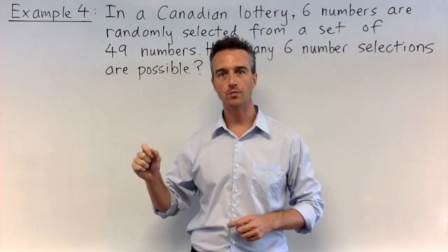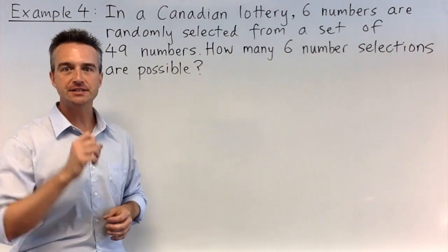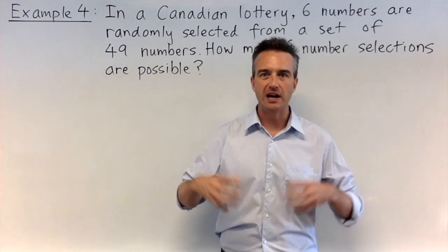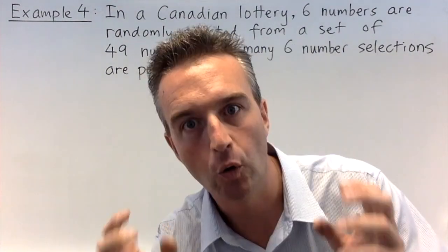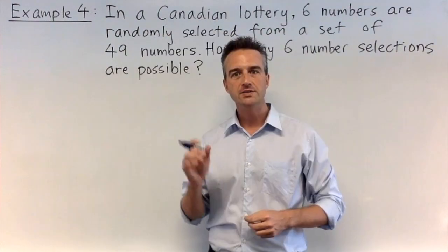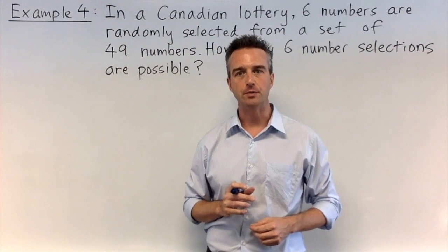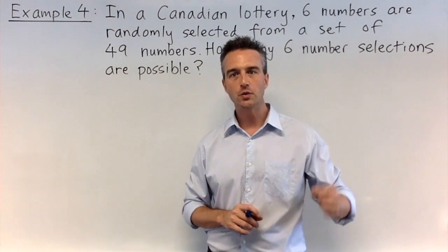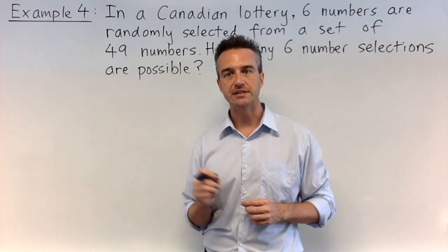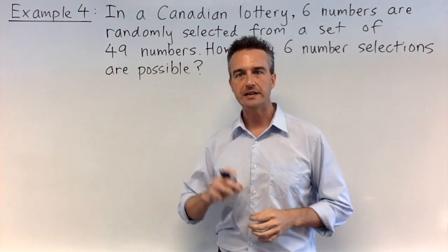Example four. In a lottery in Canada, six numbers are chosen from a set of 49. How many six number selections are possible altogether? Order is not important. Only the grouping is important. So this is a combinations problem. 49 numbers total, so n is 49. We are choosing six numbers, so r is 6. So the answer 49C6.